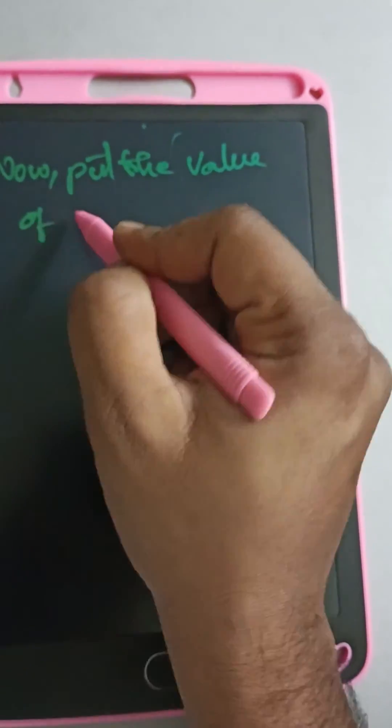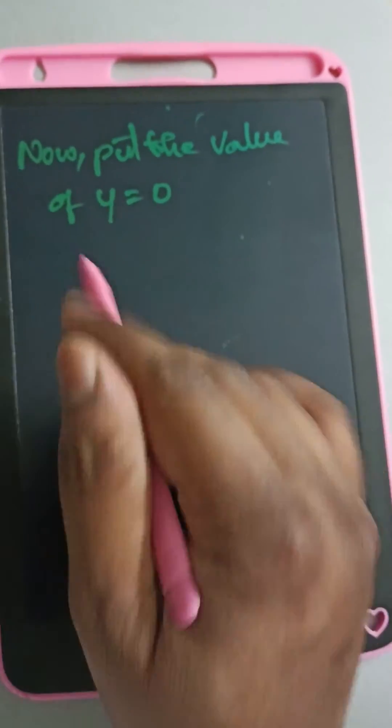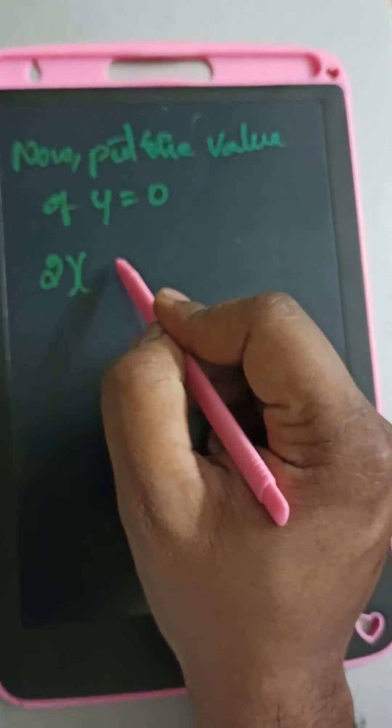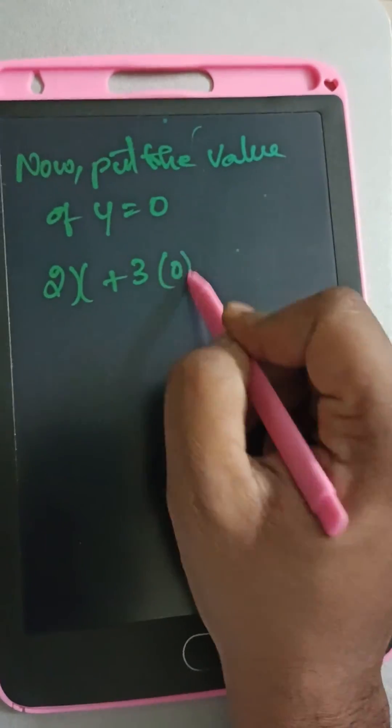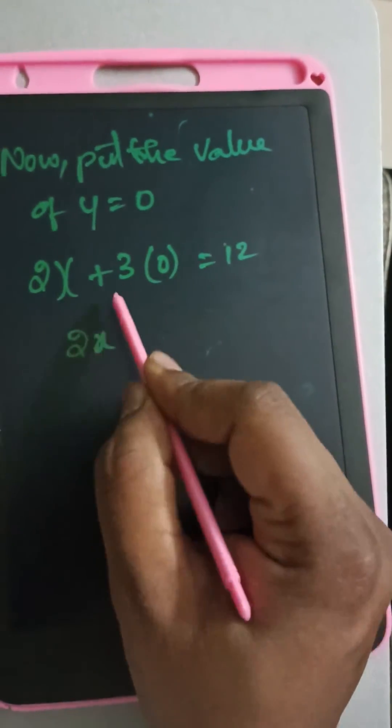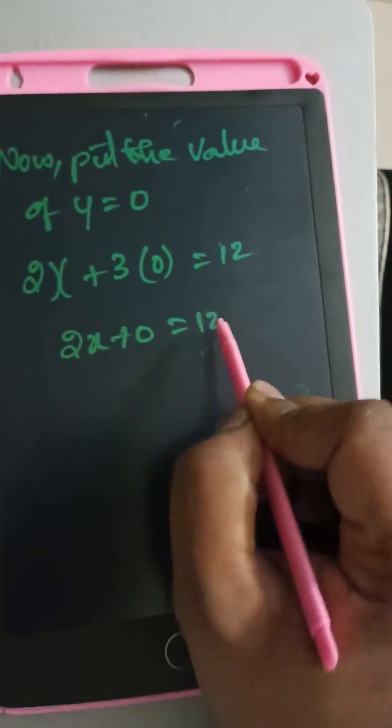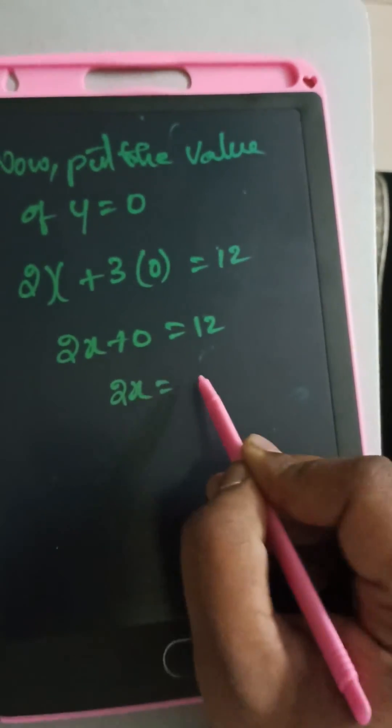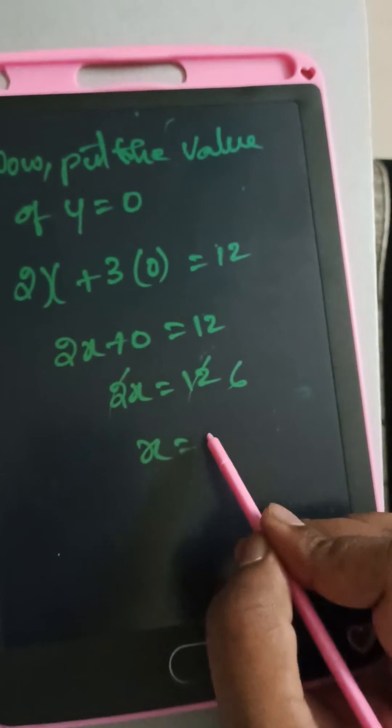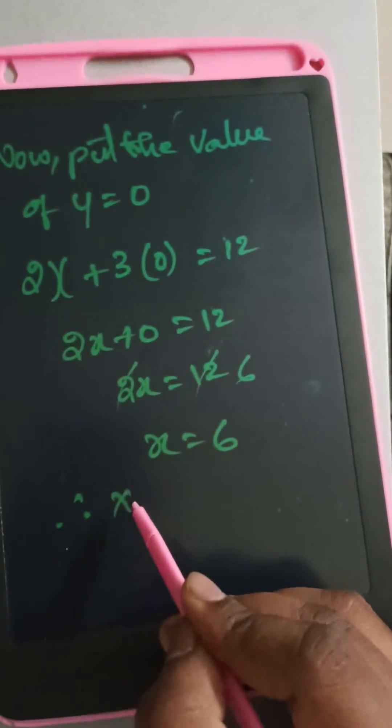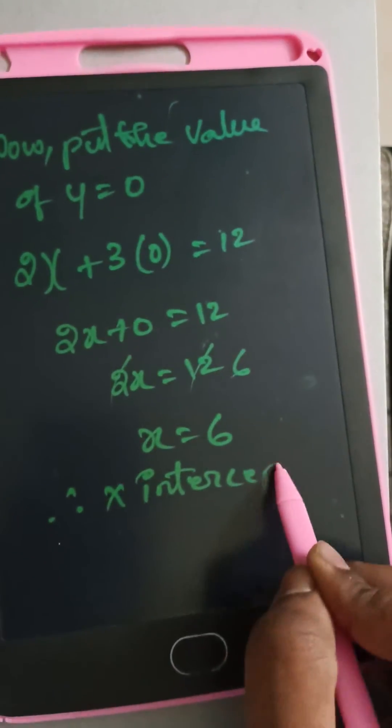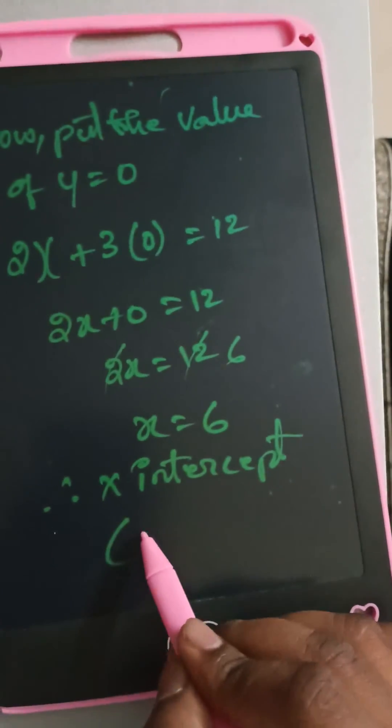2x plus 3 times 0 equals 12. 2x equals 12, so x equals 6. Therefore, the x-intercept value is (6, 0).